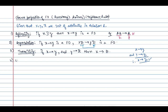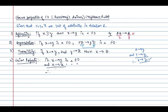The next property is the union property. If X determines Y is a functional dependency and X determines Z is a functional dependency, you can union these two and say X determines YZ. This is called the union property.